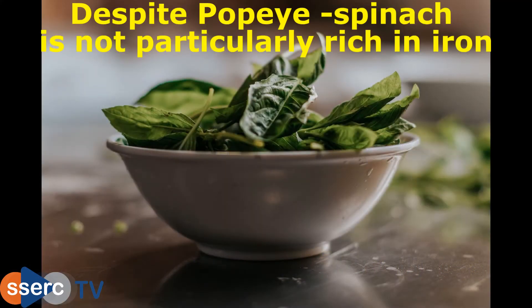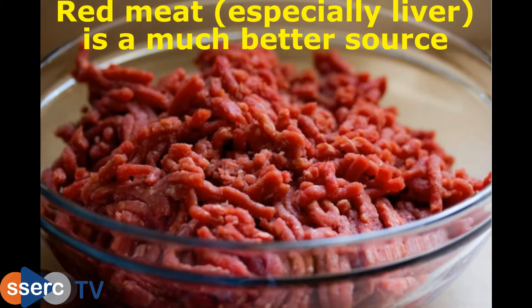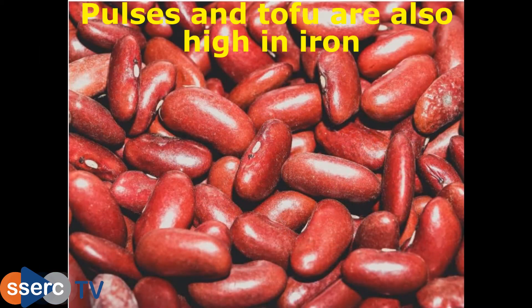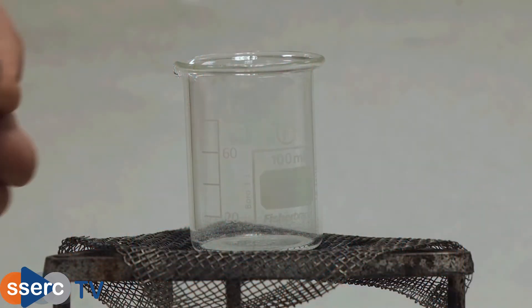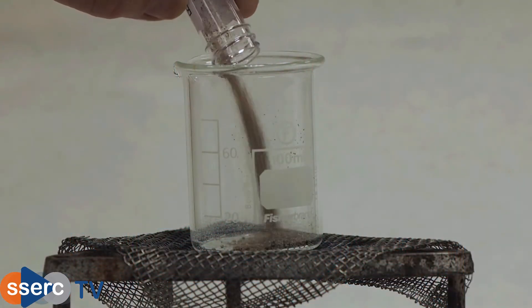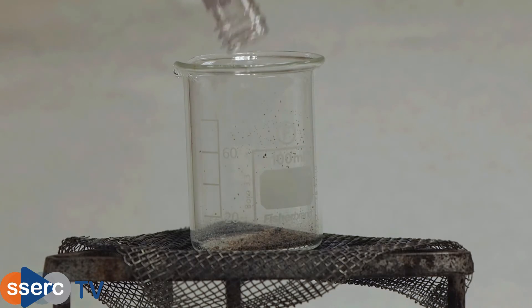It is possible to analyze the iron content of foods quite easily using colorimetry, as long as you can get the iron into solution. In this case we're using tea, but the same process will work for any food.